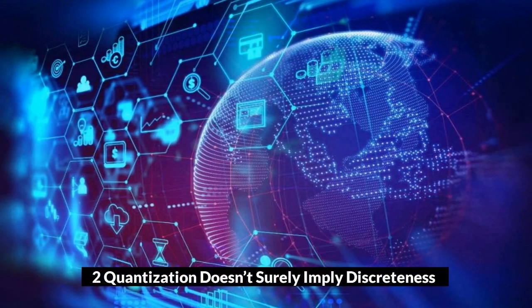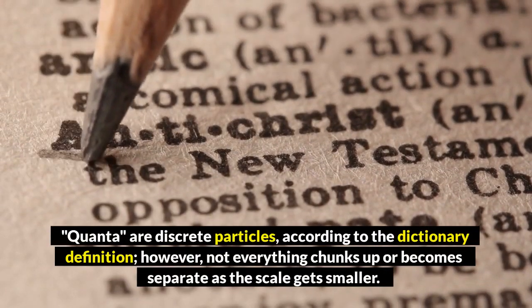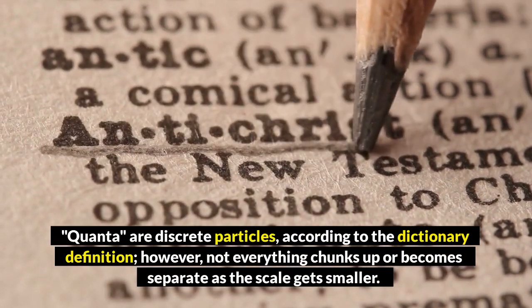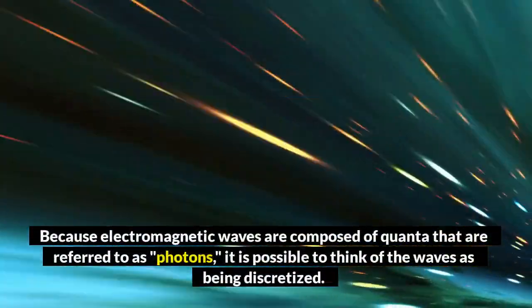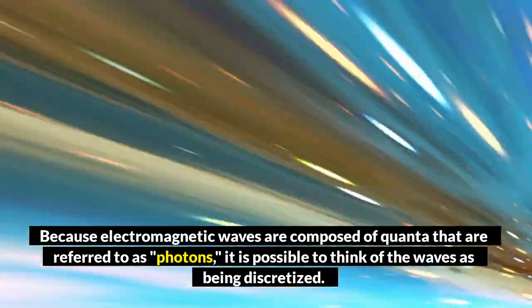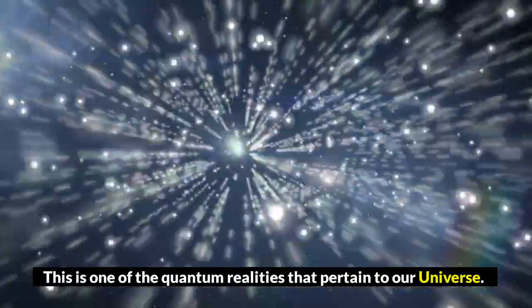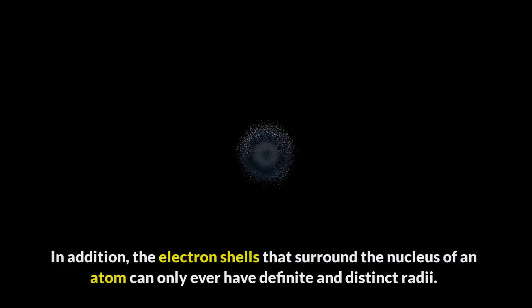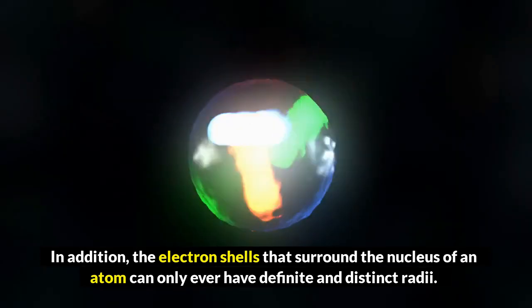2. Quantization doesn't surely imply discreteness. Quanta are discrete particles, according to the dictionary definition. However, not everything chunks up or becomes separate as the scale gets smaller. Because electromagnetic waves are composed of quanta that are referred to as photons, it is possible to think of the waves as being discretized. This is one of the quantum realities that pertain to our universe. In addition, the electron shells that surround the nucleus of an atom can only ever have definite and distinct radii.